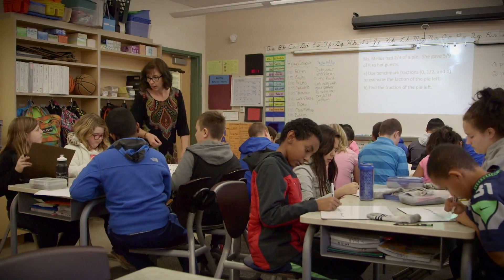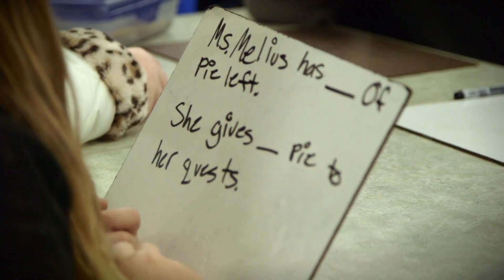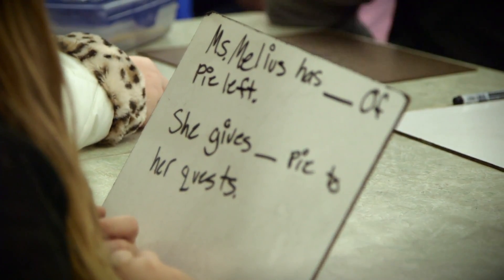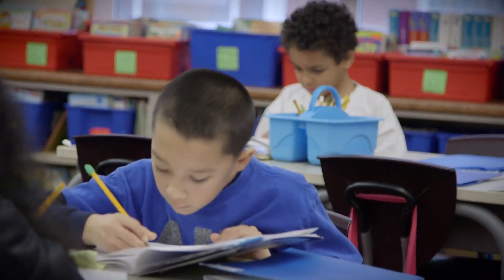Every 10 to 12 weeks, we have what we call a data cycle. Teams of teachers bring all their data. They'll use all the information they have about their students, and then they'll look and see who got the concepts, who still needs help, who's ready to move on. And then they will create what we call an instructional plan for the next 10 to 12 weeks.